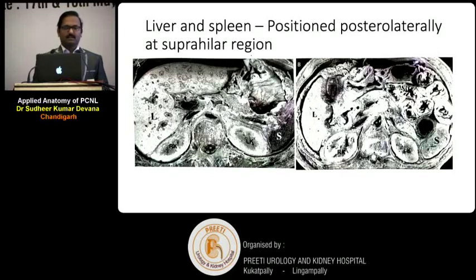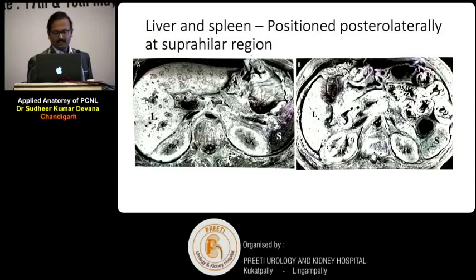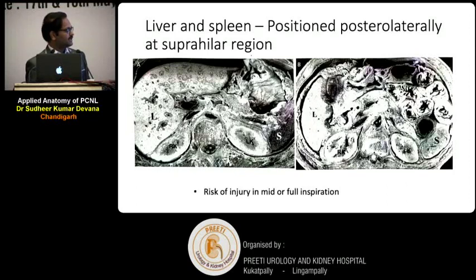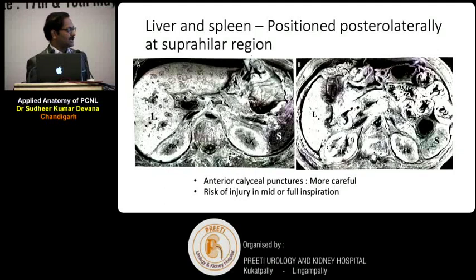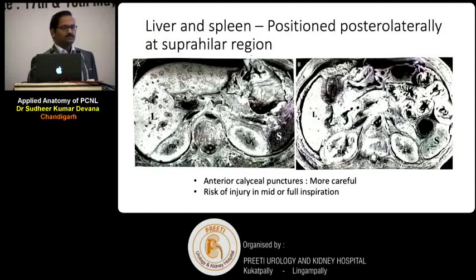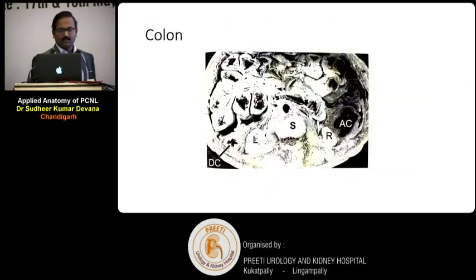Coming to the relations of the liver and the spleen: they are located superolaterally at the upper part of the kidneys. These are generally not commonly injured, but similar to the pleura moving up and down with respiration, the liver and spleen also move down. So the injury will be minimized if you do it at the end of expiration. Particularly for anterior calyceal punctures: when doing a bullseye puncture of an anterior calyx, you need to move more lateral to the kidney. When you go lateral, you will be closer to the solid organs. In patients with hepatosplenomegaly, you should be very careful.